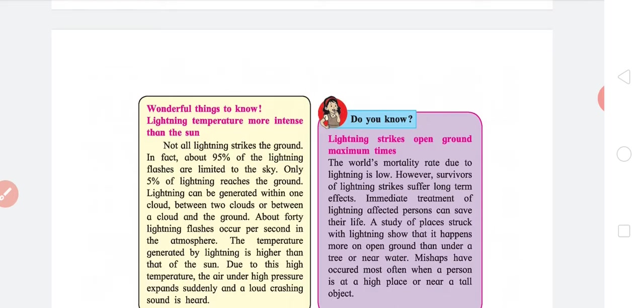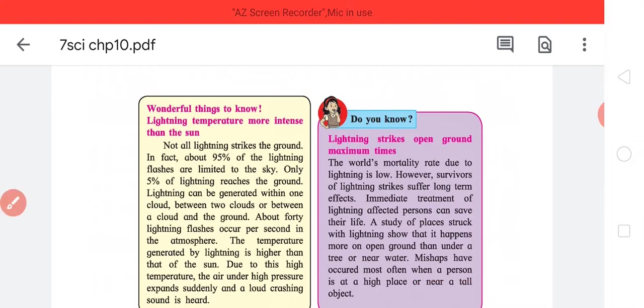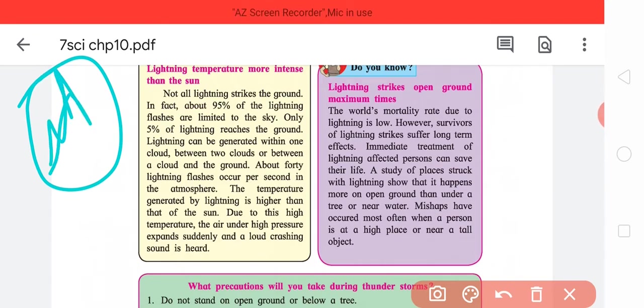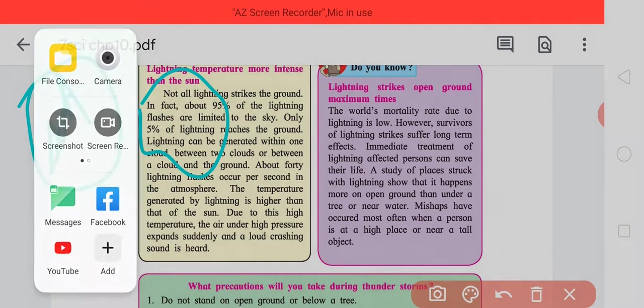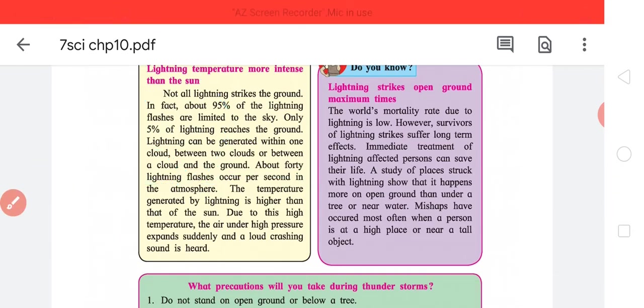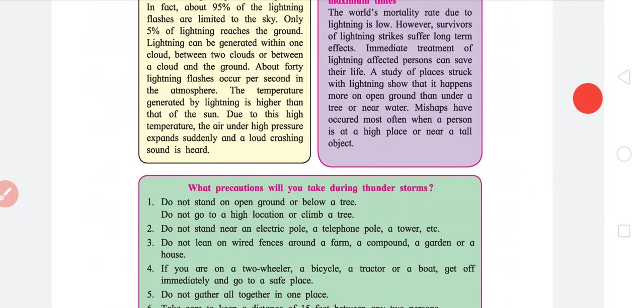Wonderful thing to know that lightning rarely strikes, for that matter I have never seen a lightning strike near the ground. Only five percent of it reaches the ground. That is a super rare stat. Lightning can be generated between one cloud, basically internal charges in the cloud generate lightning between two clouds, a very typical scenario, or between a cloud and the ground. About 40 lightning strikes occur per second in the atmosphere. The temperature is higher than that of the sun. This is actually what makes a lightning dangerous in the high sky.